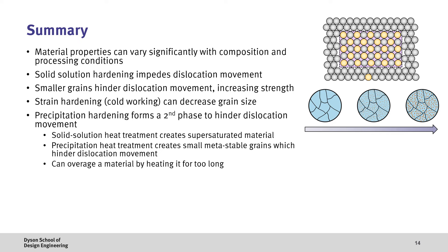Thirdly, we can use precipitation hardening to form a highly dispersed second phase, which again hinders dislocation movement. This is achieved through a two-stage heat treatment process, whereby we first perform a solid solution heat treatment to create a supersaturated material, then we reheat this material to form the second phase of precipitates. However, if this heating process occurs for too long, then the grains keep growing, and eventually the equilibrium microstructure is achieved again, and therefore we lose the strength improvements of the small particulates.